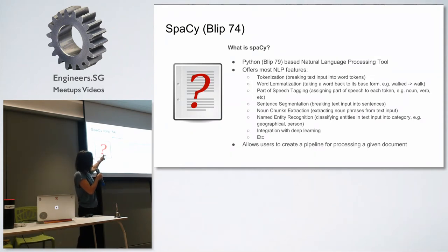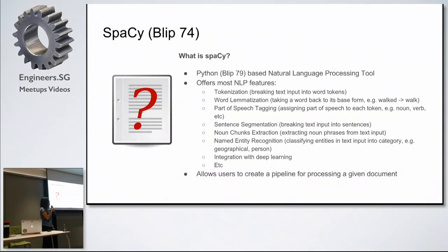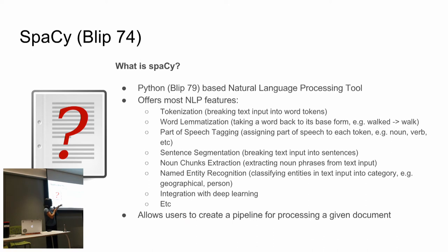What is SpaCy? Most of the NLP features it gives you are very common and very useful — the ones you would need. The key thing is integration with deep learning: you can actually plug in multiple deep learning libraries depending on your choice. SpaCy gives you that flexibility. To use SpaCy, all you have to do is create a pipeline and say, for this text, I want it to go through a tokenizer, sentence segmentation, named entity recognizer, and, say, a sentiment analysis engine. You just define the pipeline and whatever text comes in will go through it. With deep learning, you can write your own and plug it in — it's got a callback for you to integrate it.